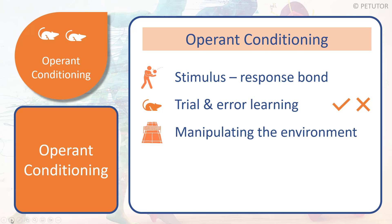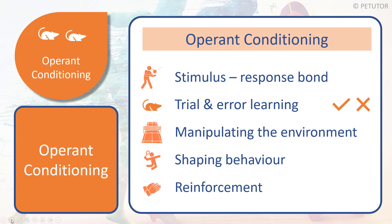We'll then look at the concept of manipulating the environment to help learning take place, and that is coupled with shaping behaviour — what exactly the learner needs to do in order to bring about the required learning. And finally we'll look at reinforcement and the part that reinforcement plays in ensuring that learning takes place.